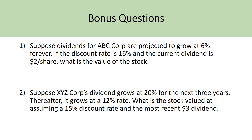For the bonus questions: first, suppose dividends for ABC Corp are projected to grow at 6% forever; if the discount rate is 16% and the current dividend is $2 a share, what is the value of the stock? Second, suppose XYZ Corp's dividend grows at 20% for the next three years, and thereafter at 12%; what is the stock's value assuming a 15% discount rate and a most recent $3 dividend? Based on these questions, identify which formula or procedure to use, then comment and share your answers below. Please like and subscribe — I enjoy making these videos and want to keep helping you.